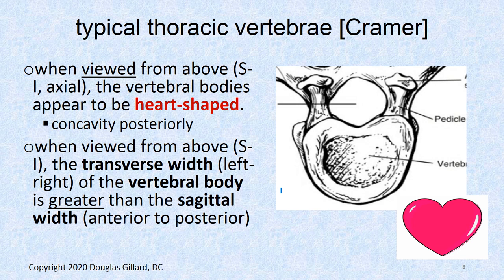Another interesting thing about the typical thoracic vertebra: if you look from an inferior-to-superior or superior-to-inferior view, they are heart-shaped. The other vertebrae aren't heart-shaped like that. Also, the transverse width of the vertebral body is greater than the sagittal width — the lateral width is greater than the A-to-P width — hence you get a kind of heart shape.